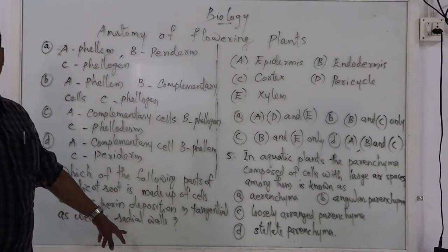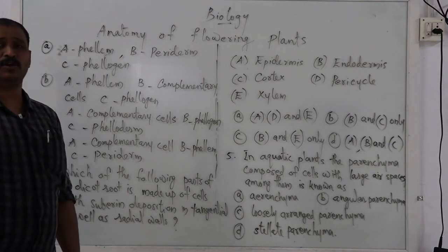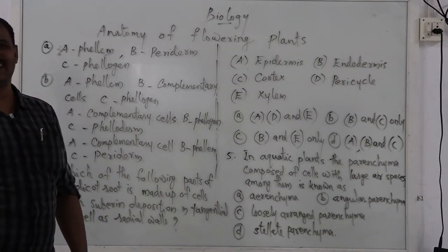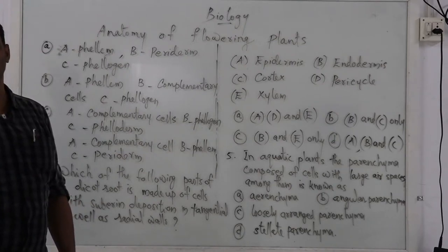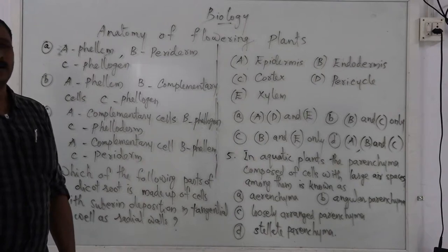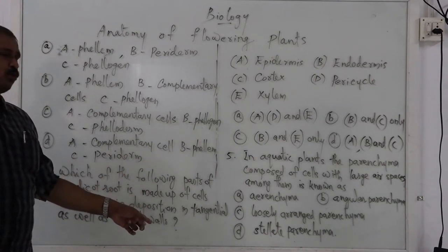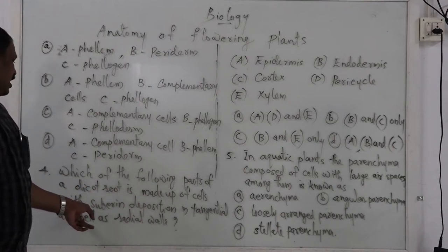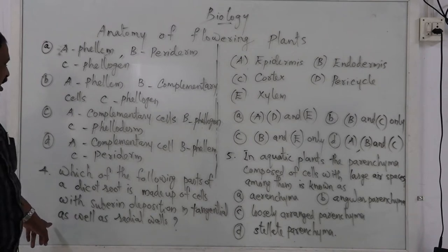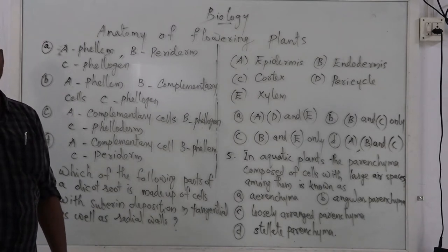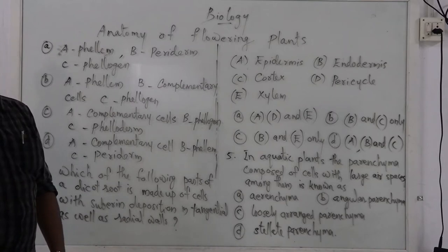Phellogen is the meristematic layer. Next: which of the following parts of a dicot root is made up of cells with suberin deposition in tangential as well as radial walls? Suberin is a waxy substance deposited in cell walls. Options include A: D and E; option B: B and C only; option C: B and E only; option D: A, B and C only.